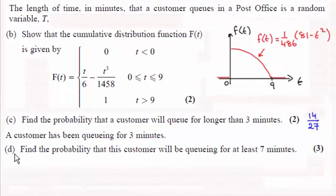Hi. Now in this video we're going to look at part D where we're told that a customer has been queuing for three minutes and we need to find the probability that this customer will be queuing for at least seven minutes.